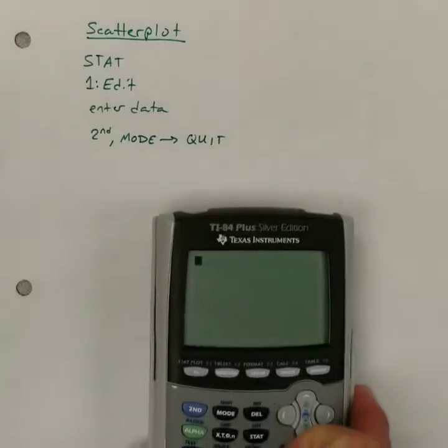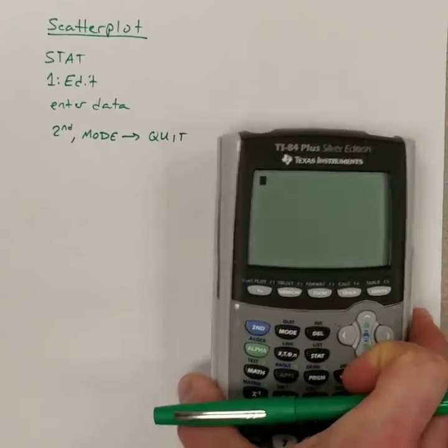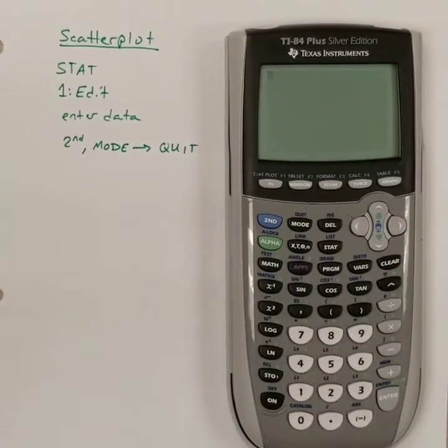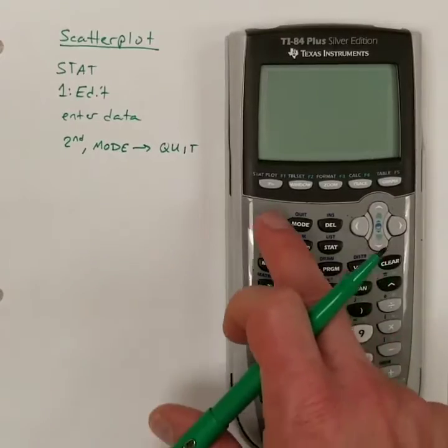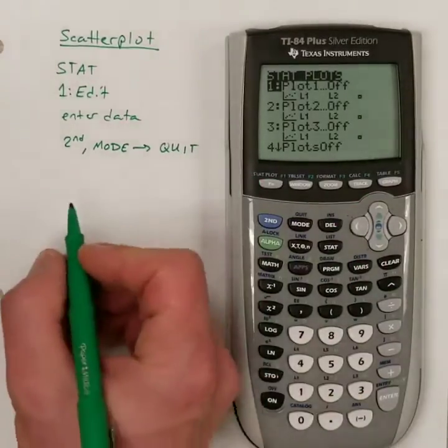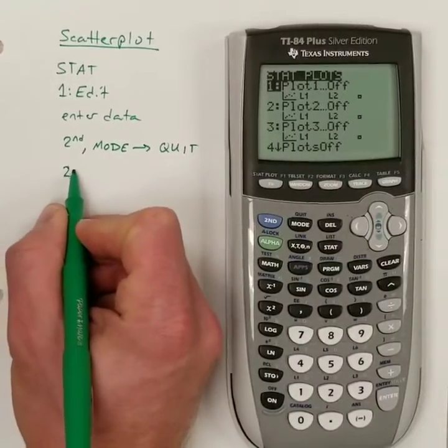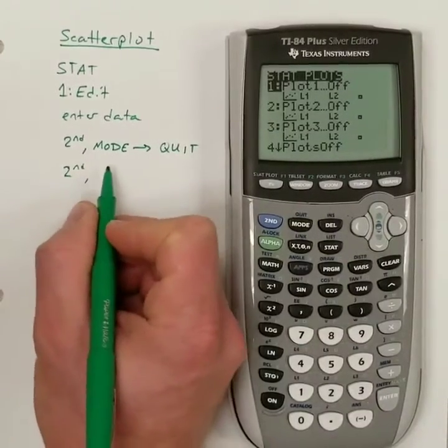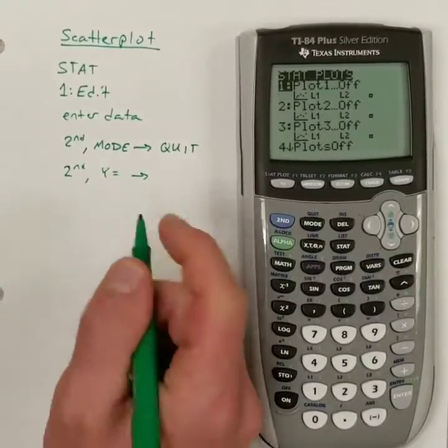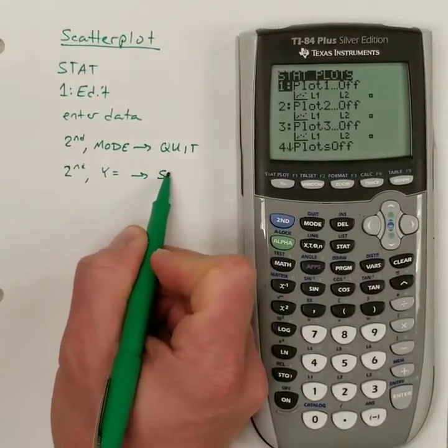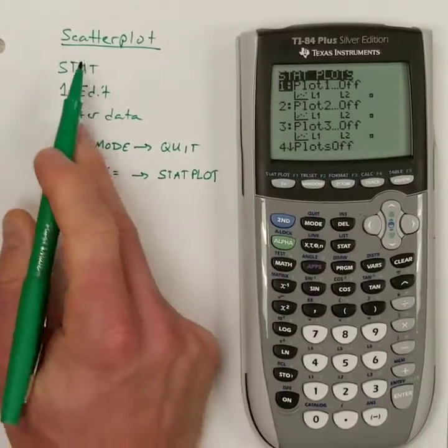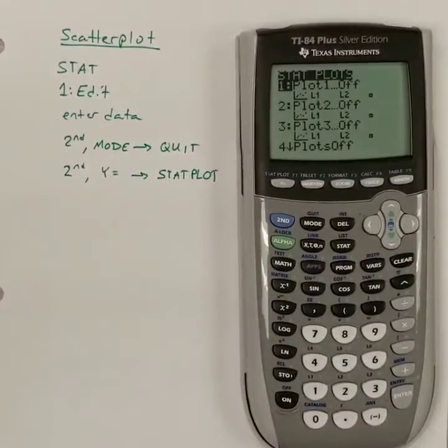Then, show the calculator. Maybe I'll try to get both of these on here at the same time. Then we're going to hit 2nd and then the stat plot, which is the Y equals button. So, you hit 2nd and the Y equals, which gives you stat plot. That's how we're going to plot this.